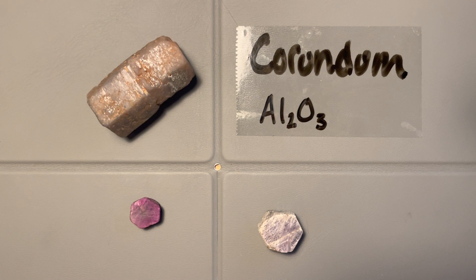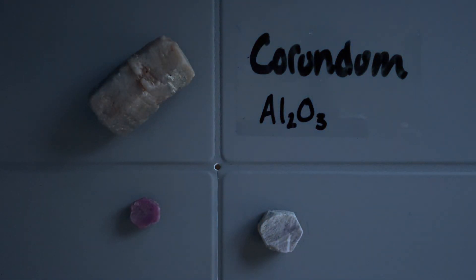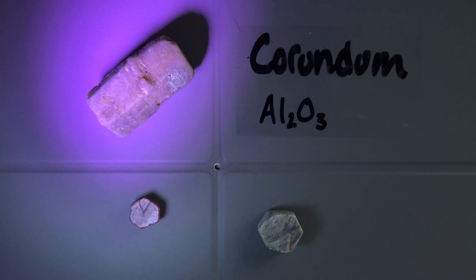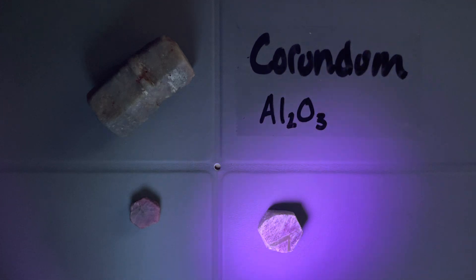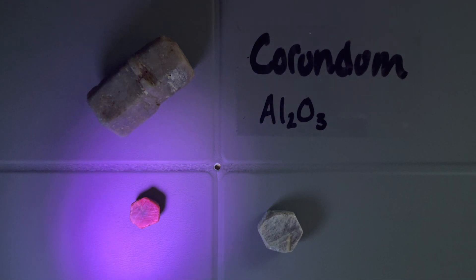Another thing that can happen is that we also have some fluorescence. Let's do a fluorescence test with a UV light. These two samples that are the darker colors don't really show fluorescence. But this one — an ugly kind of ruby — actually does have some really good fluorescence going on.